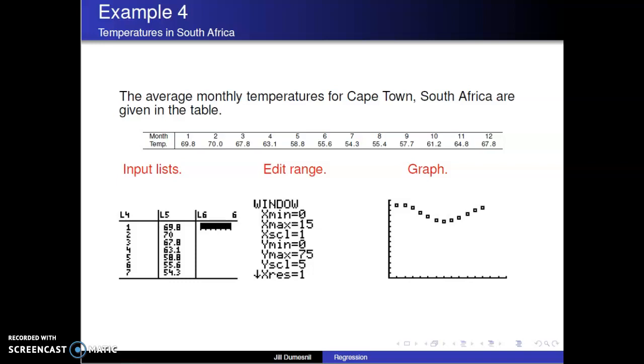In fact, the pattern would repeat itself if we added another year of temperature data. This oscillating pattern is symptomatic of a sine curve.